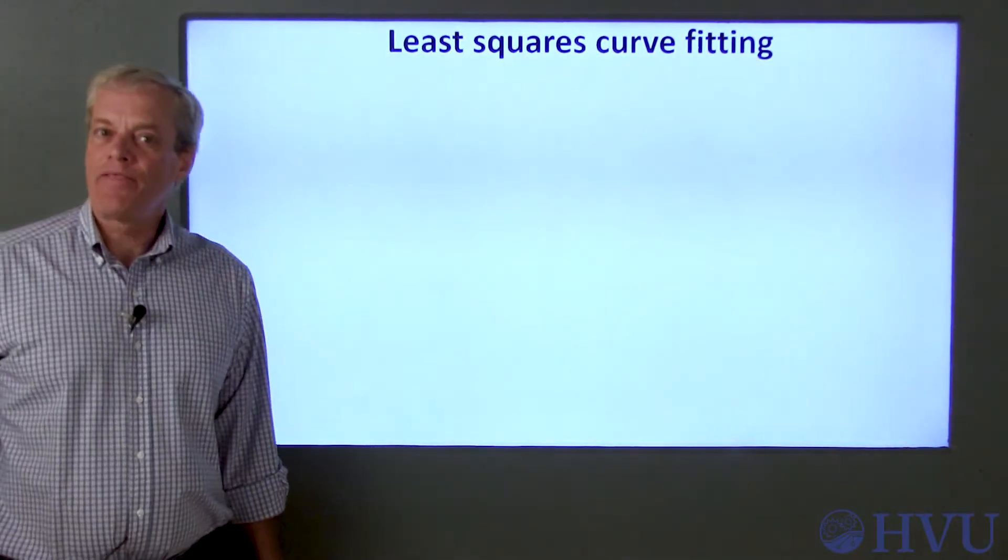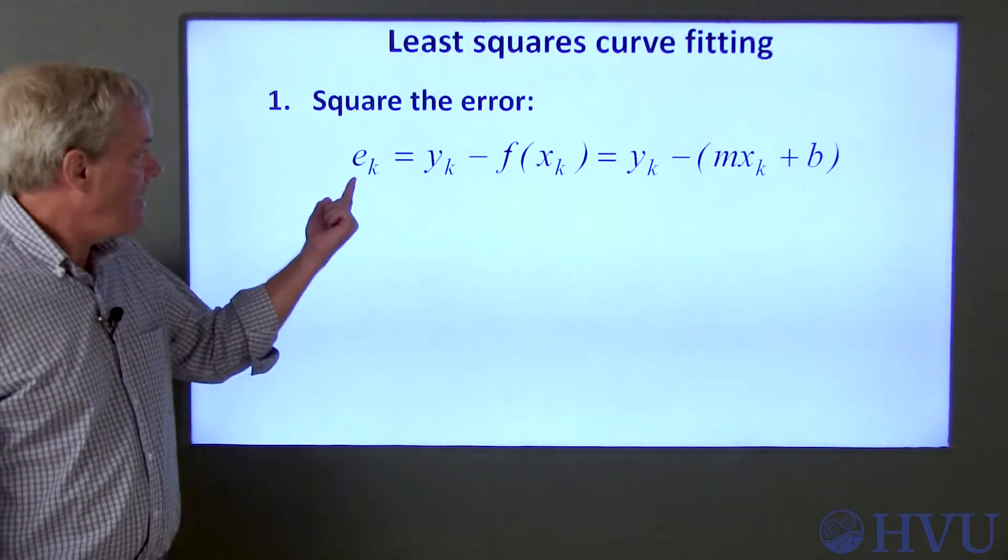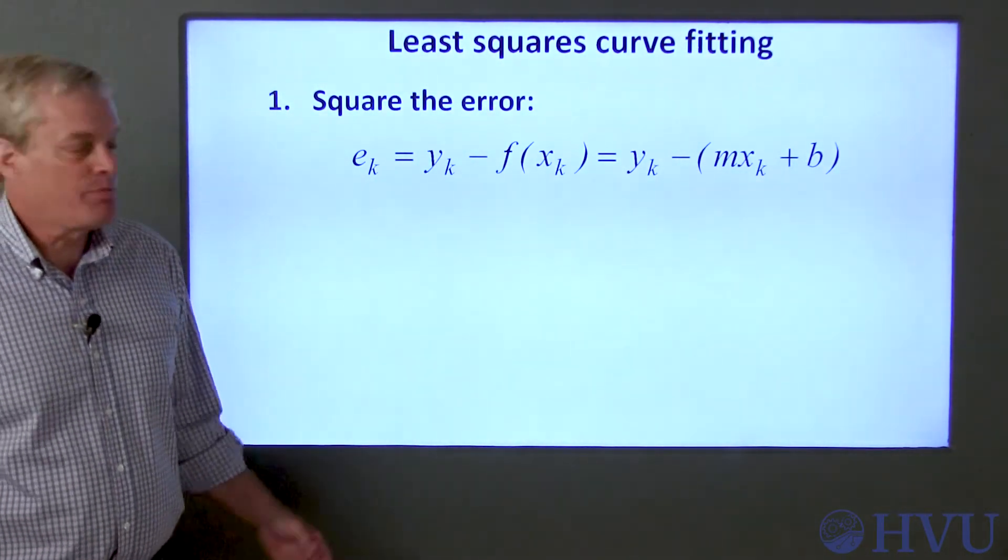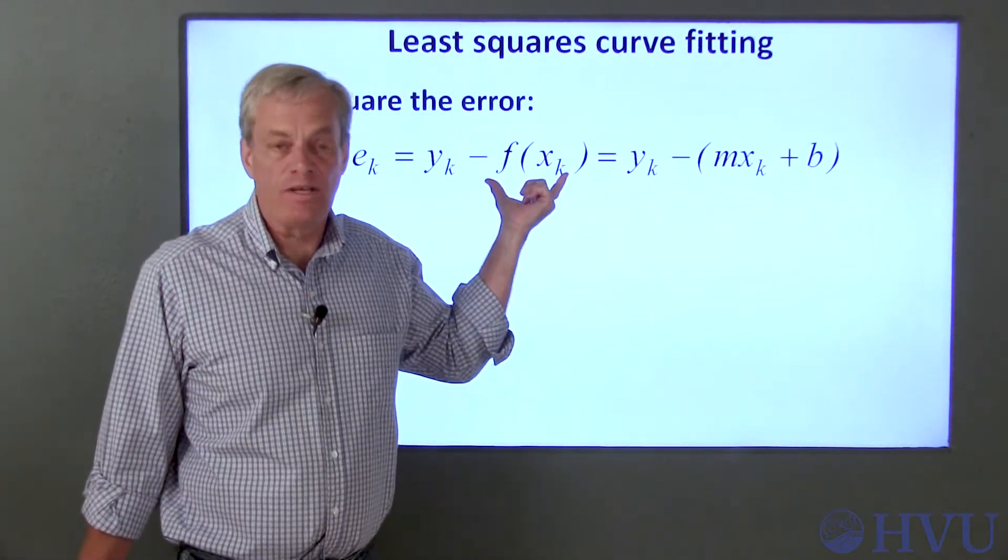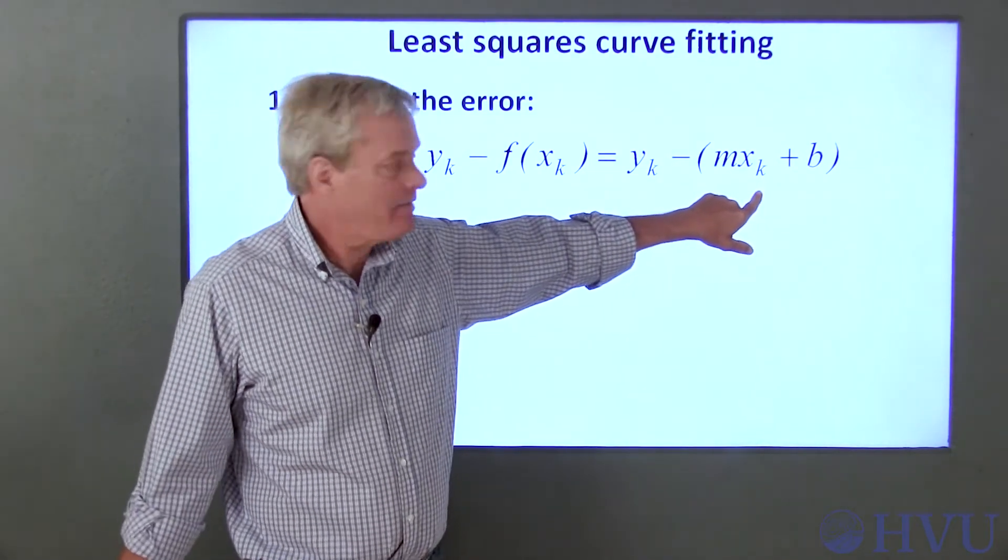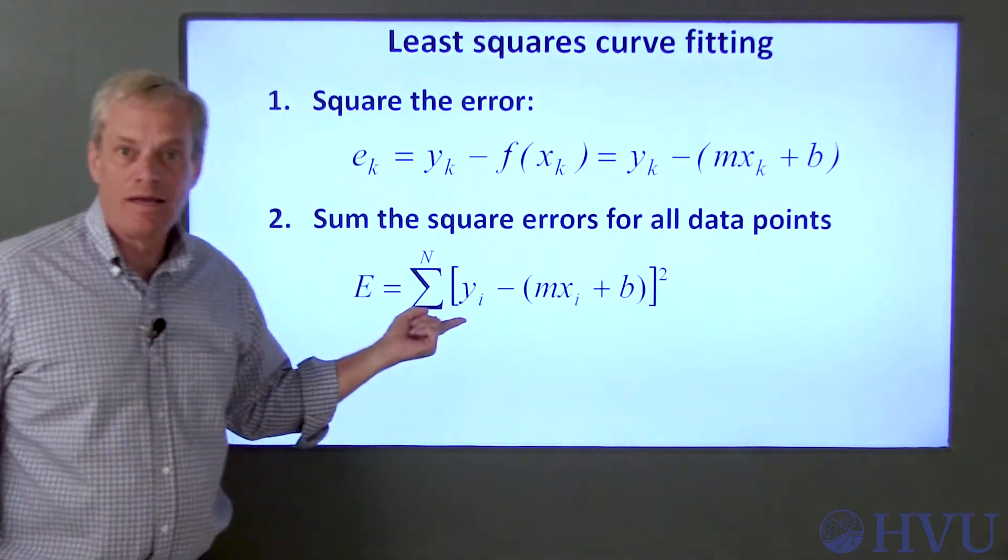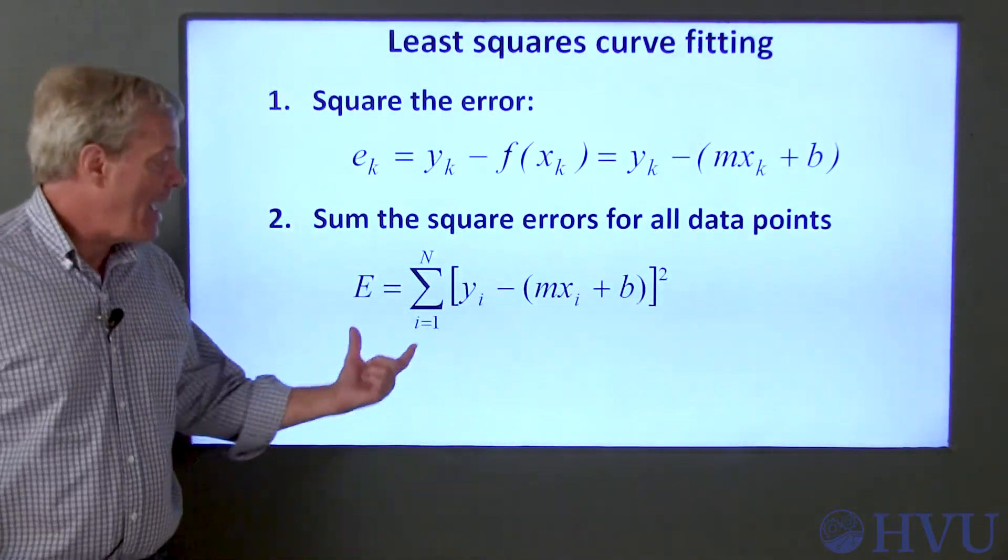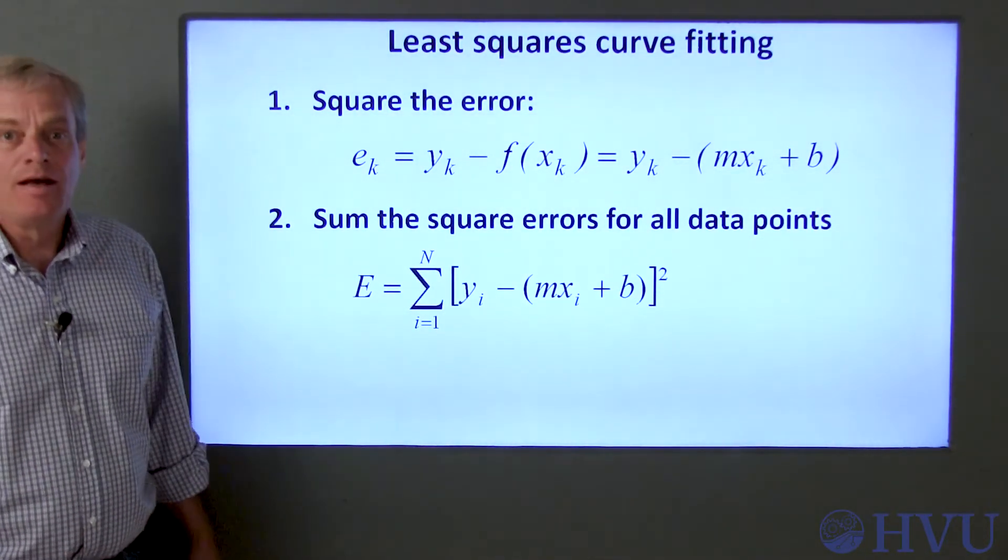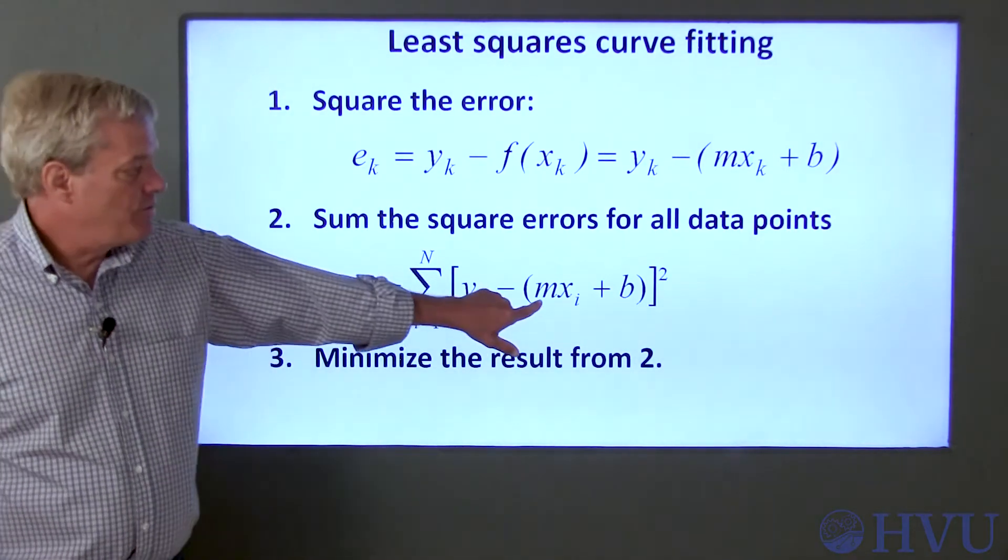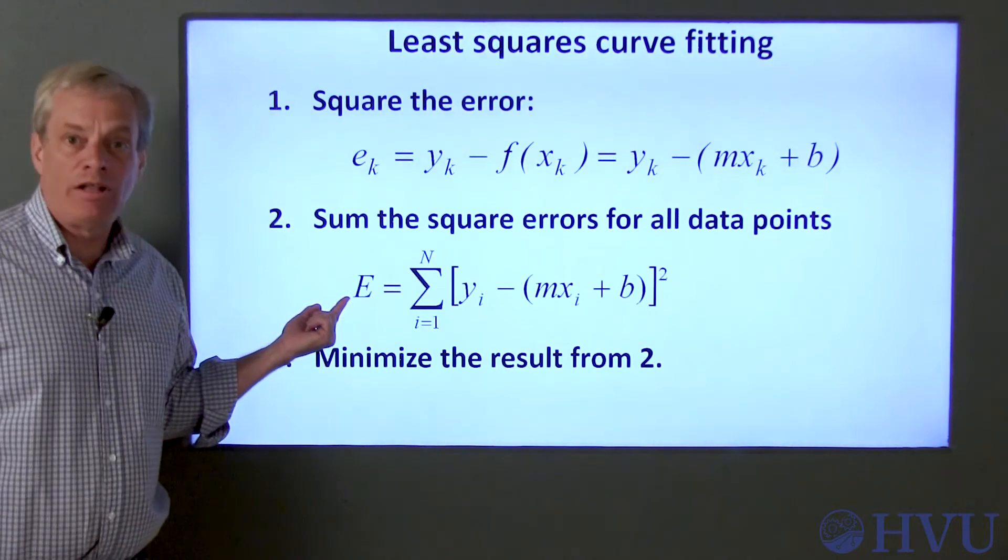Now let's briefly go over the mathematics associated with this approach. The first step is to define the error at data point K, which is just the difference between the measured Y value at that data point and the Y value that would be given by the curve fit, which will be M times the value of X at the kth data point plus B. Then square this error at each data point and add up all the contributions to get an overall error between all the data points in the curve fit. Finally, choose values of M and B in the equation of the straight line that minimizes this overall error, capital E.